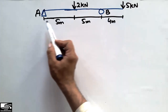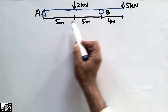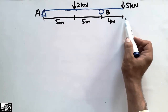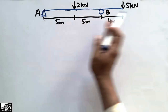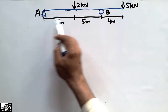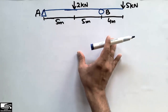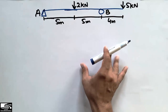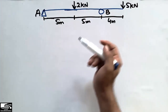The beam has a 2 kN load acting from the left at a distance of 5 meters, and a 5 kN load acting at the end of the beam at a distance of 14 meters from the left support. There are two supports: one is a hinge and one is a roller. We are going to calculate the shear force and bending moment.